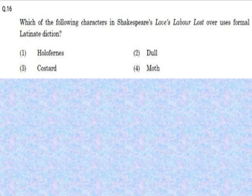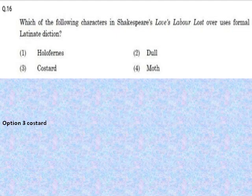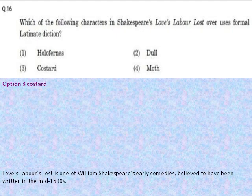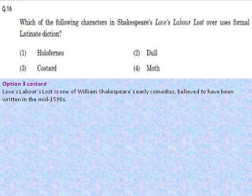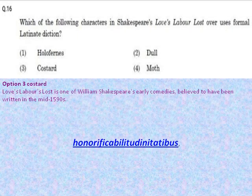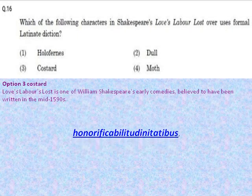Literature and Shakespeare — these two words seem to be synonymous. Whenever anybody talks about literature, Shakespeare is the first word that strikes the mind. The question here is: which character in Shakespeare's Love's Labour's Lost overuses Latinate diction? Option 3, Costard, is the right answer. Love's Labour's Lost is one of Shakespeare's very early comedies, believed to have been written in the mid-1590s. Costard is shown as a comic figure who pokes fun at the upper class throughout the play, and while mocking a pedantic schoolmaster he uses a very big word.